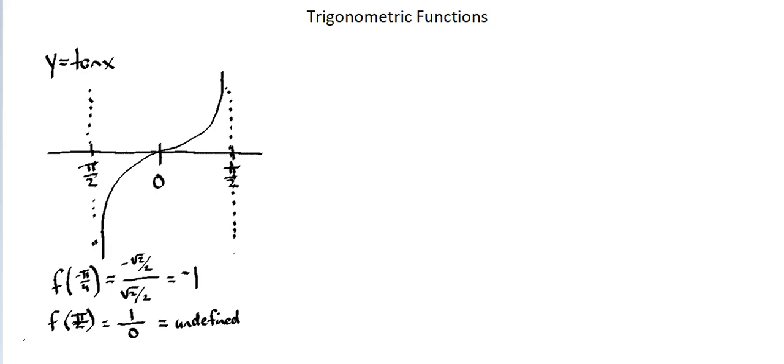With this basic example, we can look at the general function for tangent, which is y equals a tangent bx plus c. In the case of tangent, there isn't an amplitude. We can see in the example on the left that there are unlimited positive and negative y values. There isn't an amplitude that we apply to the tangent function.